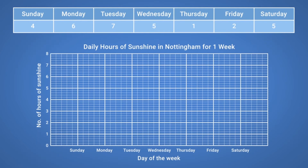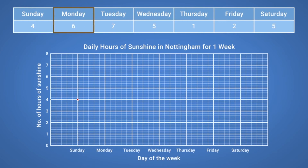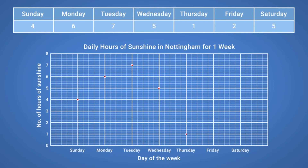We can now start to plot the data in the table onto our graph. Looking at the first piece of data, we need to plot the point going up from Sunday and across from 4. For the second column, we plot the point going up from Monday and across from 6. We then follow this same process for all the remaining data in the table.